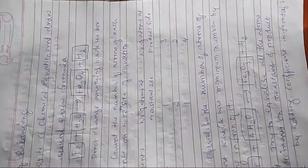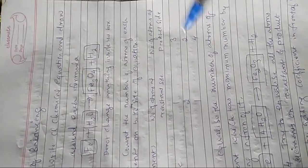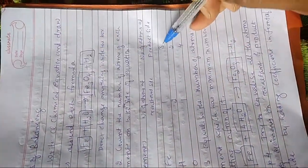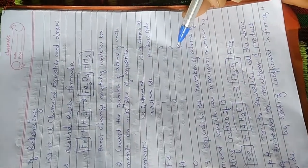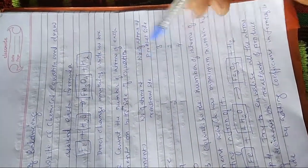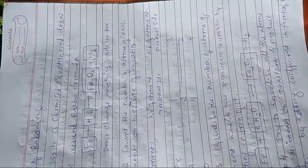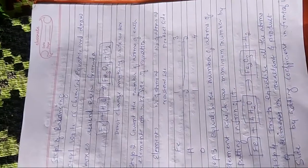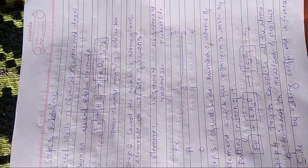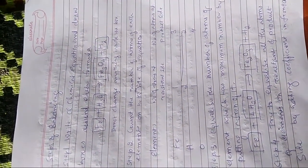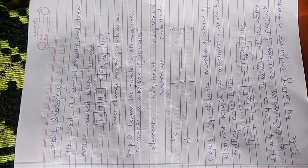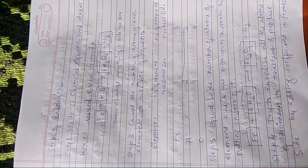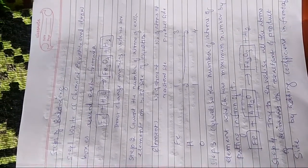Then write down the number of atoms at the product side: Fe = 3, O = 4, hydrogen = 2. Here these two (hydrogen) are balanced. The remaining are unbalanced: reactant side Fe is 1, product side it is 3; oxygen is 1 on the reactant side, product side it is 4.